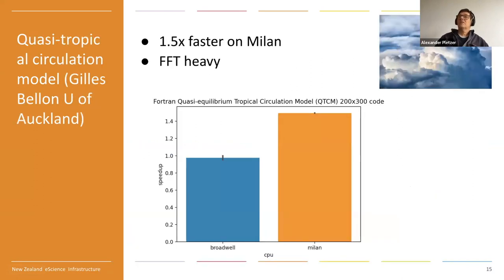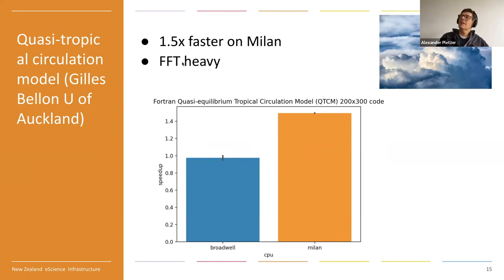Here we have a quasi-tropical circulation model from researcher Gilles Bellon of the University of Auckland. We essentially get a 1.5x speedup on Milan compared to Mahuika original. This is a code involving heavy dense matrix multiplication, which is the main performance bottleneck in that particular code.